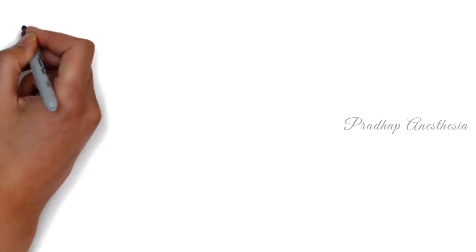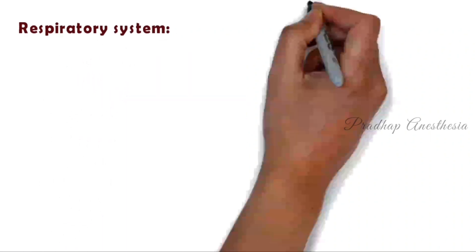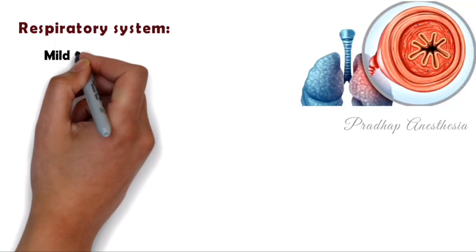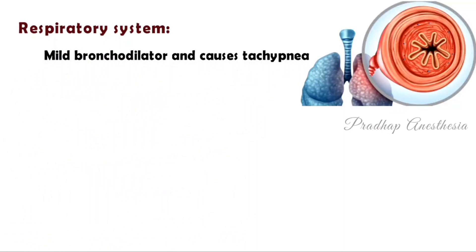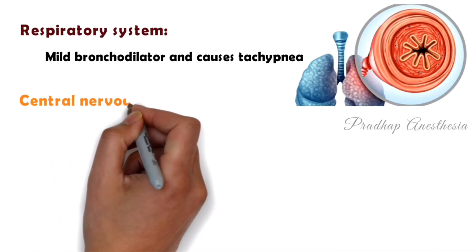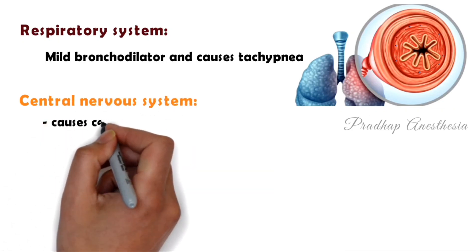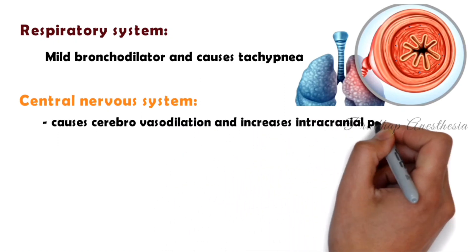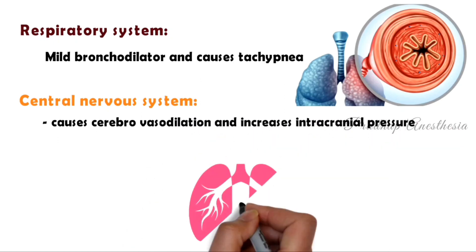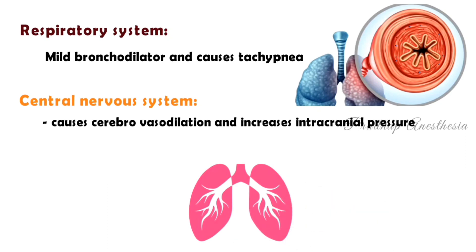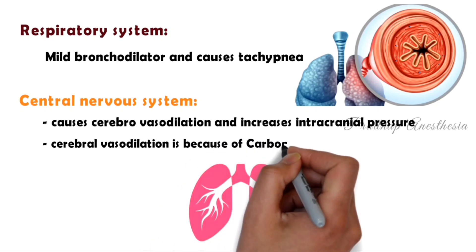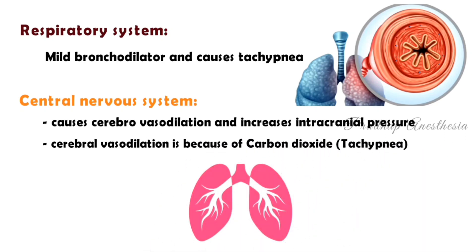Next, effects on the respiratory system: isoflurane is a mild bronchodilator and causes tachypnea. Central nervous system: isoflurane causes cerebral vasodilation and increases intracranial pressure. This cerebral vasodilation is because of carbon dioxide — an increase in carbon dioxide level dilates the cerebral blood vessels and increases intracranial pressure.